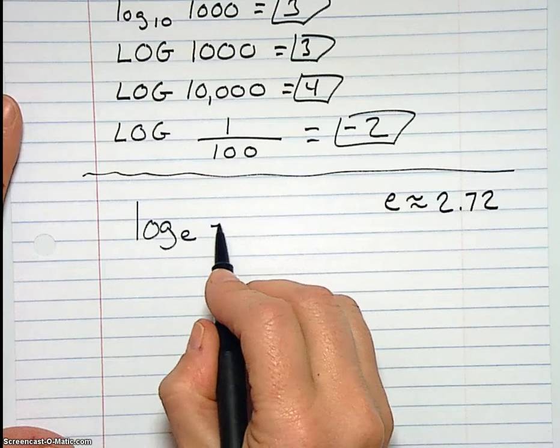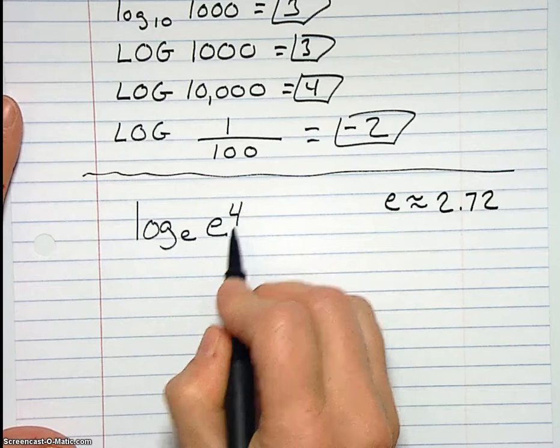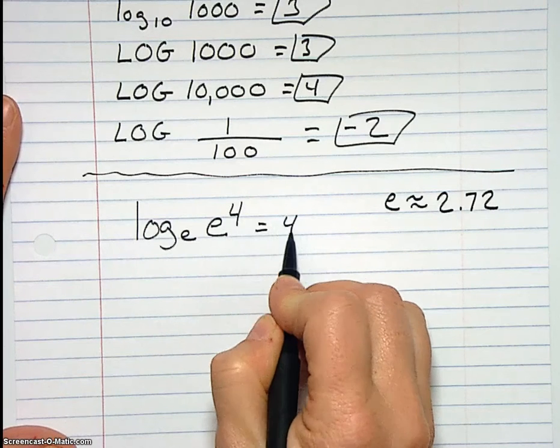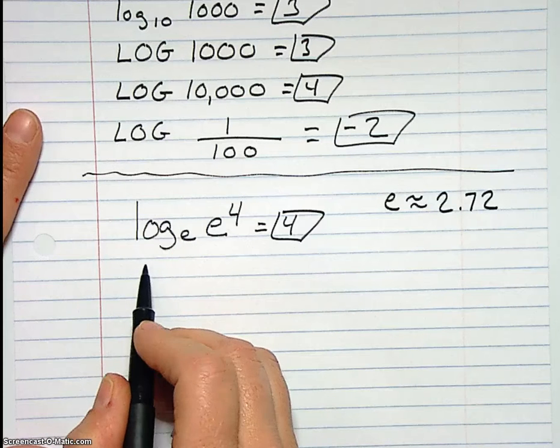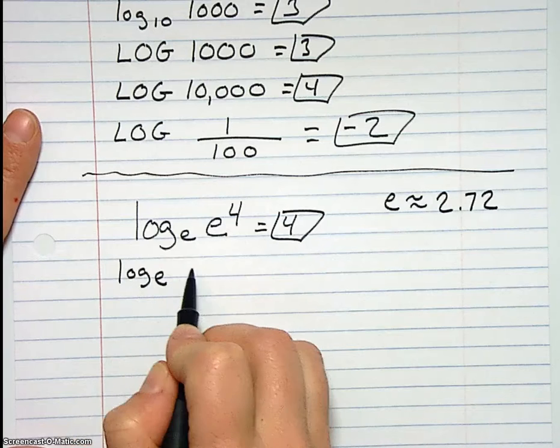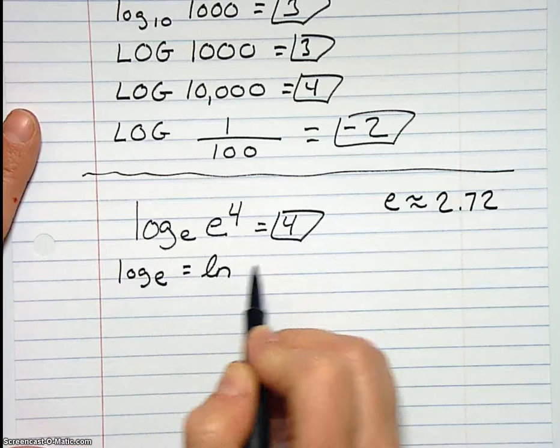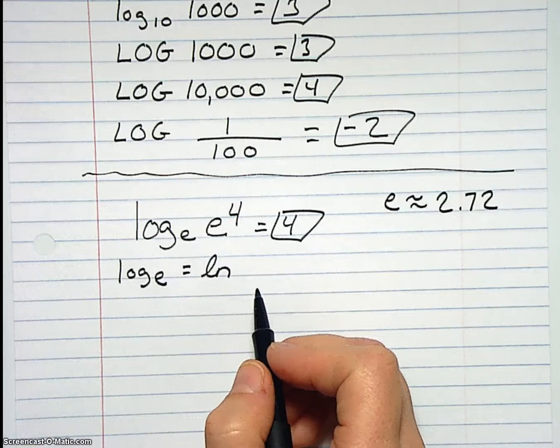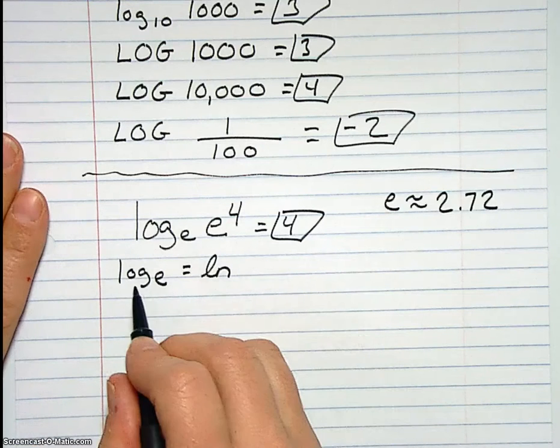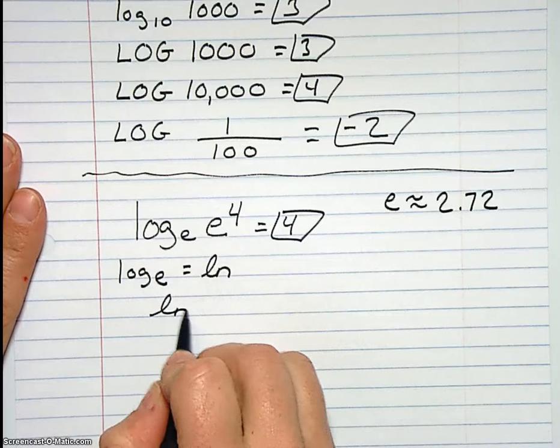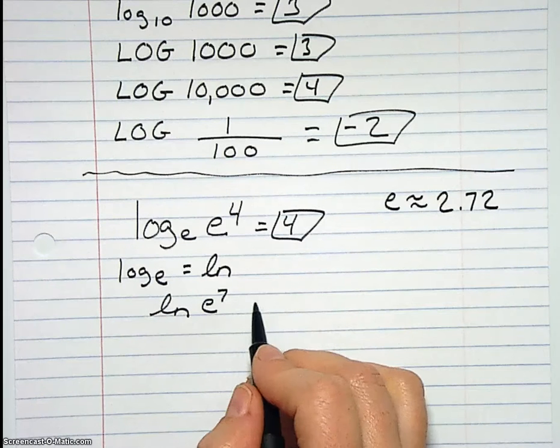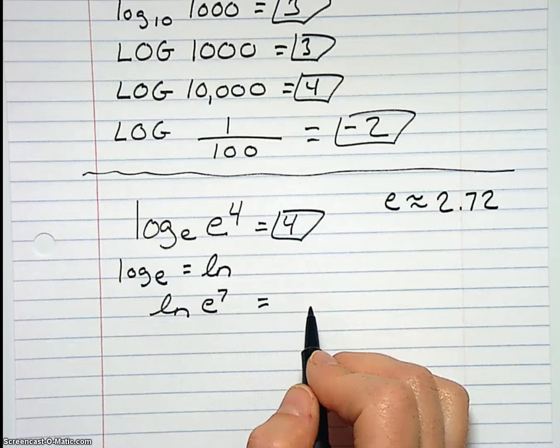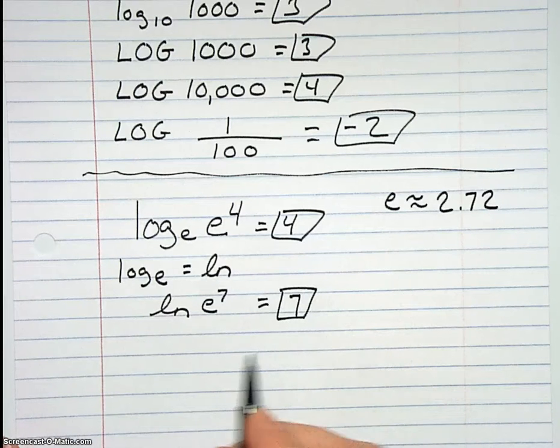So log base E asks you what power E is to, which is, it sounds really weird depending on how much we've talked about E. But if you had something like E to the fourth, the question would be E raised to what power is E to the fourth? So it's 4. Like it sounds kind of weird. We're going to do just a couple of these. But let me first tell you that log base E is the natural log, LN, because lots of things in nature grow with this growth constant. So LN is the same thing as log base E. So let's do LN of E to the 7. This asks E to what power is E to the 7? So what do we get, Terrence? 7. Okay, so really this is like one of those ones that when you miss it on the quiz, you feel really silly later.